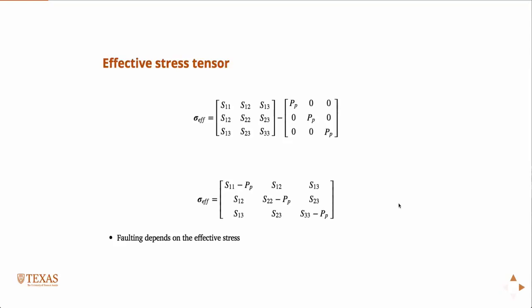If we write this in tensor notation, we have the tensor σ equals the tensor S minus the pore pressure times the identity matrix. The pore pressure is just the scalar.